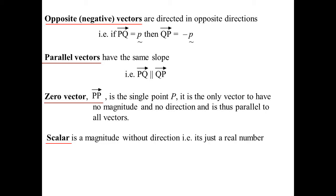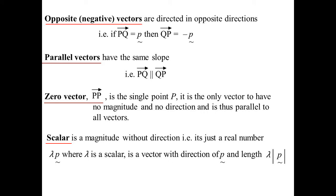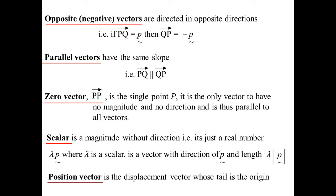Scalar then — a scalar is that magnitude without worrying about the direction. It's just a number. You might see something like lambda — in vectors we often use Greek letters for the scalar. Lambda times p: lambda is a scalar, just some multiple of the vector p. Its length would become whatever the magnitude of p is, times the scalar. A position vector is a very specific displacement vector where the tail has to be at the origin.